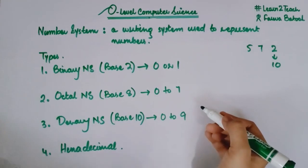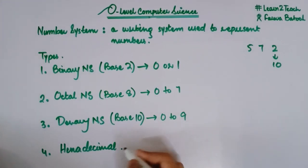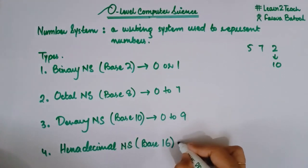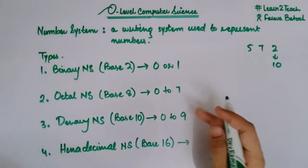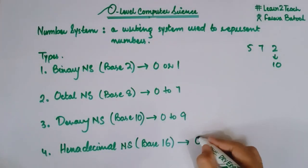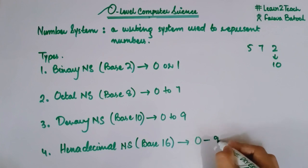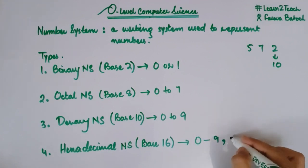So the last one is the hexadecimal number system. And here I am going to have 16 numbers or 16 digits. And this is quite different from others. Why? Because I am going to have some alphabets as well over here.